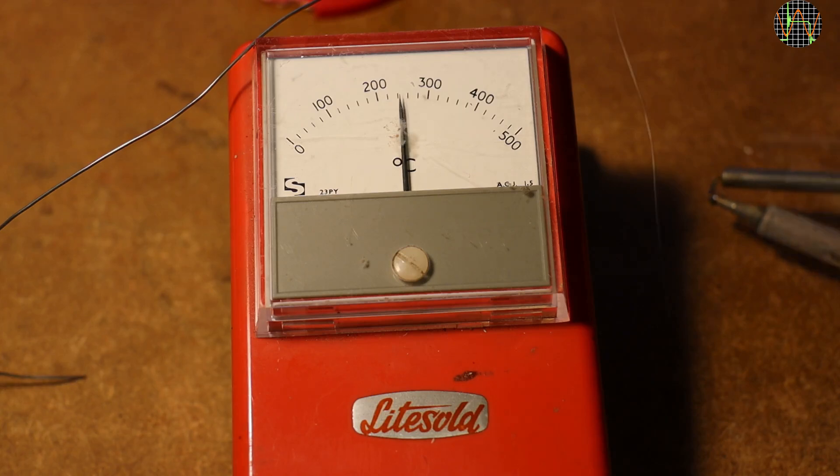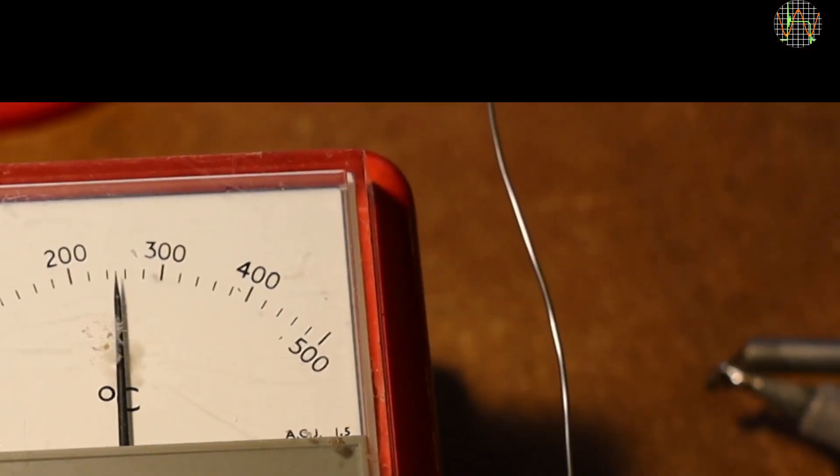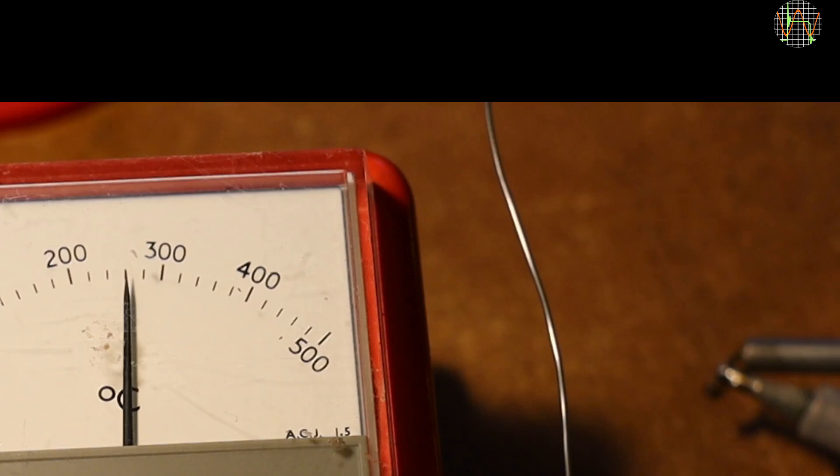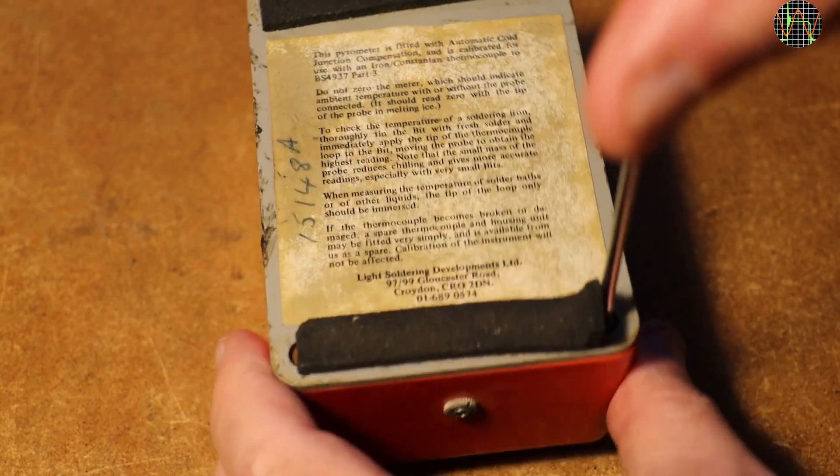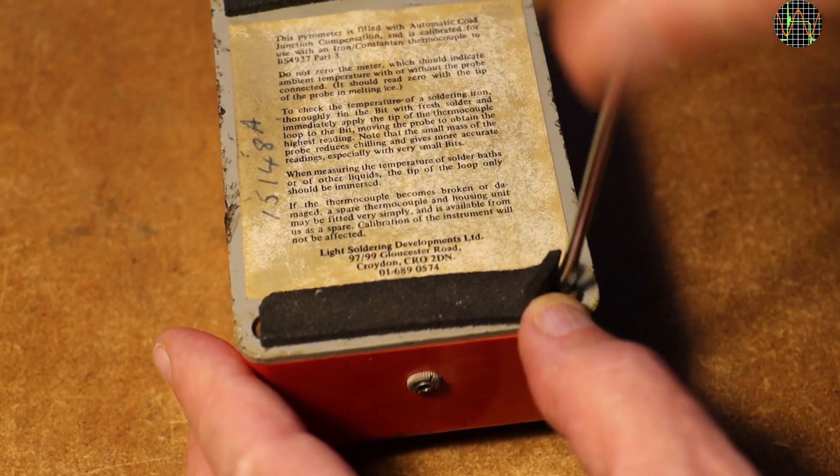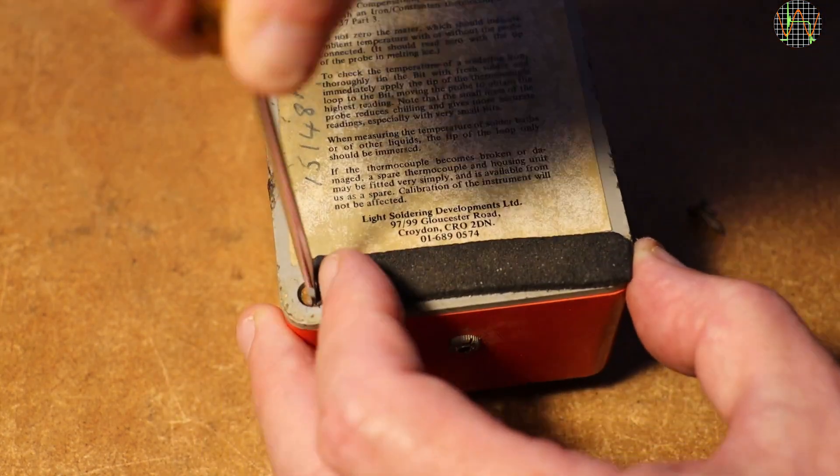Even practically drowning the sensor in a blob of liquid solder doesn't produce higher readouts. I think it is time to have a closer look at how this thing is supposed to work. I suspected that there might be screws hiding under the felt strips that act as feet, so let's open the unit up and have a peek inside.